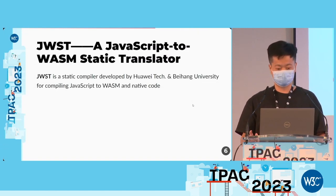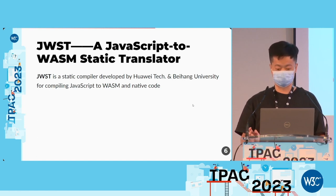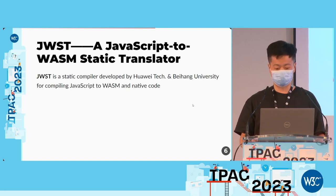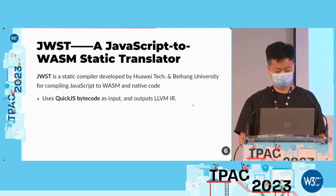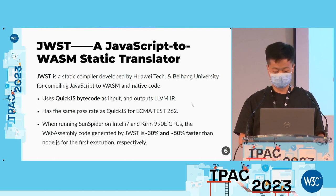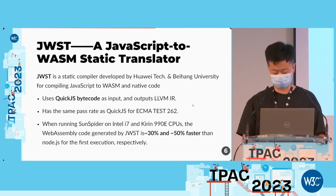GWST is a JavaScript to WASM Static Translator — an attempt in this direction. This project is developed by Huawei Technology and Beihang University. We use QuickJS bytecode as input and output LLVM IR. In some cases, the WebAssembly code generated by GWST is 30% to 50% faster than Node.js for the first execution.